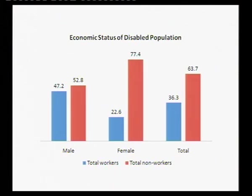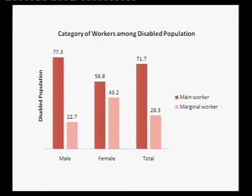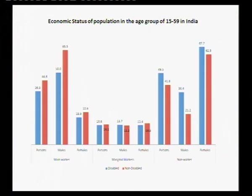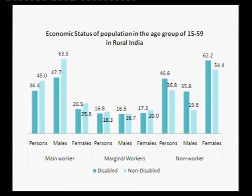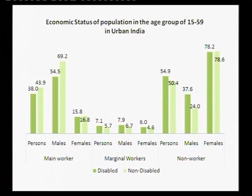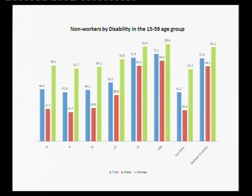Looking at economic status, 64% of the total disabled population were non-workers. Standard economic definitions classify those not in the labor force, including the disabled, as non-workers — but that does not mean disabled persons do not work. Among those who do work, 77% were main workers, meaning they worked for more than 180 days. In rural India, there are fewer workers among the disabled compared to urban areas.